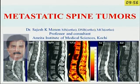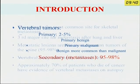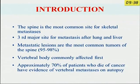This is about metastatic spine tumors. In vertebral tumors, the primary will be only 2 to 5 percent, so up to 95 to 98 percent are metastatic spinal cord tumors. The spine is the most common site for skeletal metastasis and it is the third major site for metastasis after lung and liver. Metastatic lesions are the most common tumors of the spine.